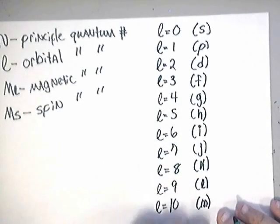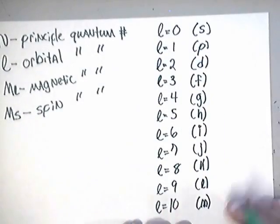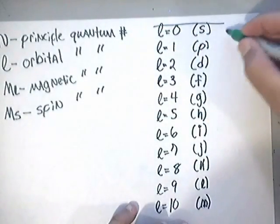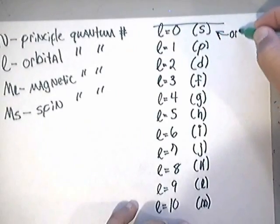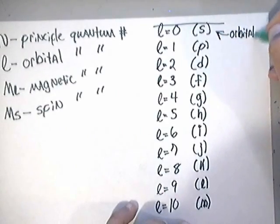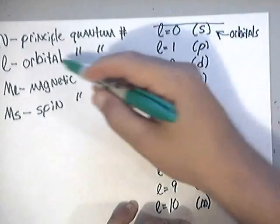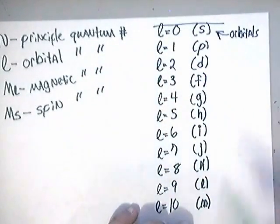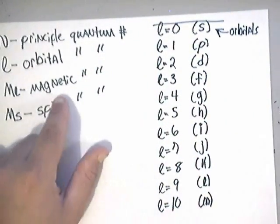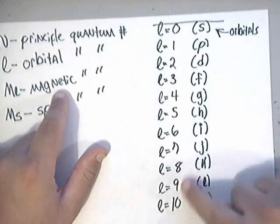So, I hope that helps with that. This is basically your orbitals. And this is your orbital quantum numbers here.